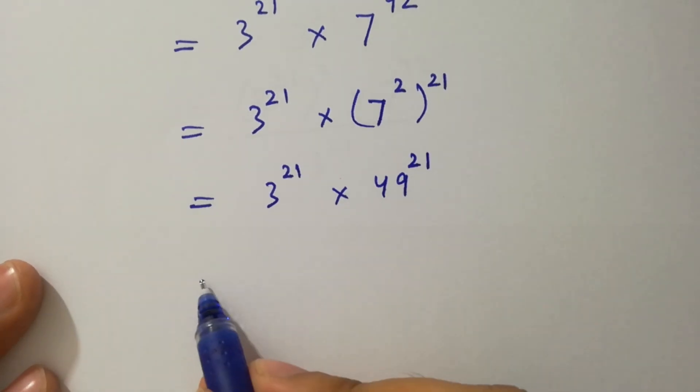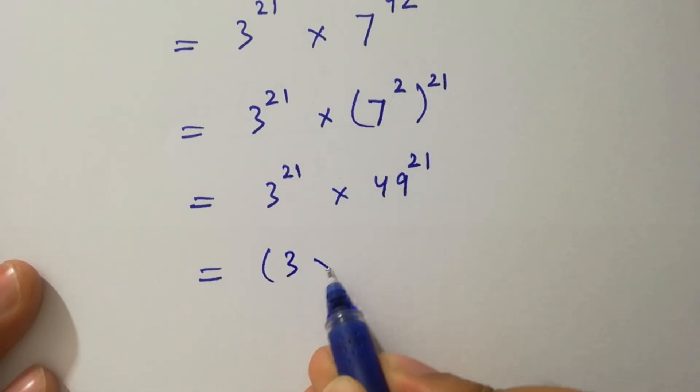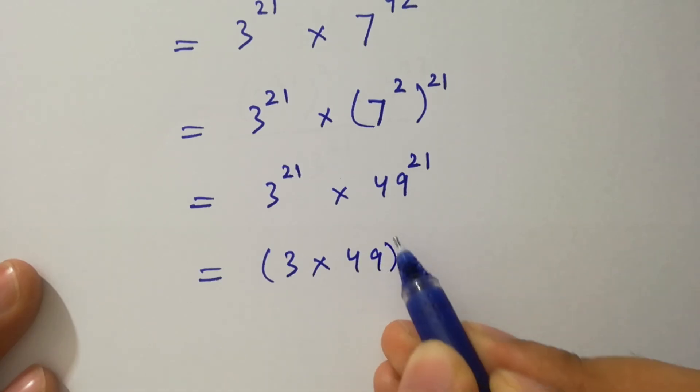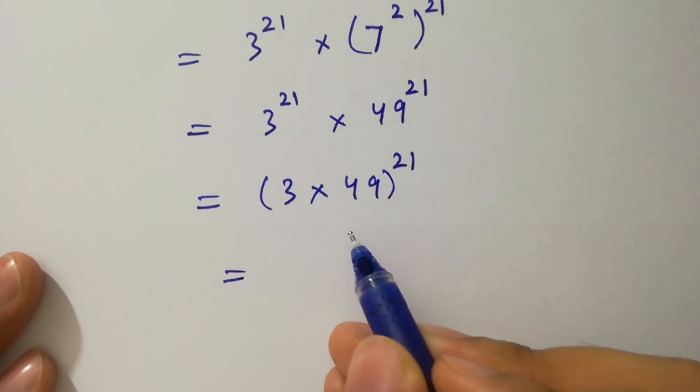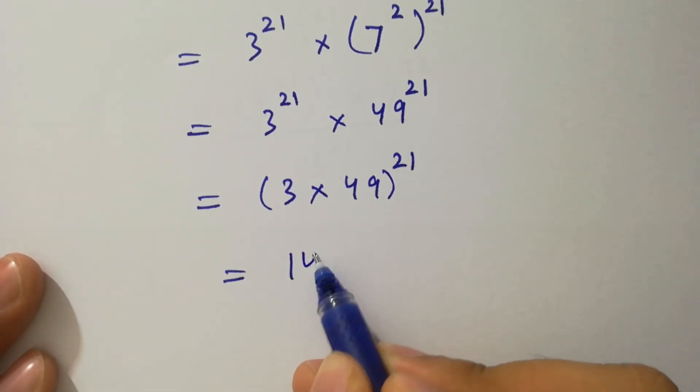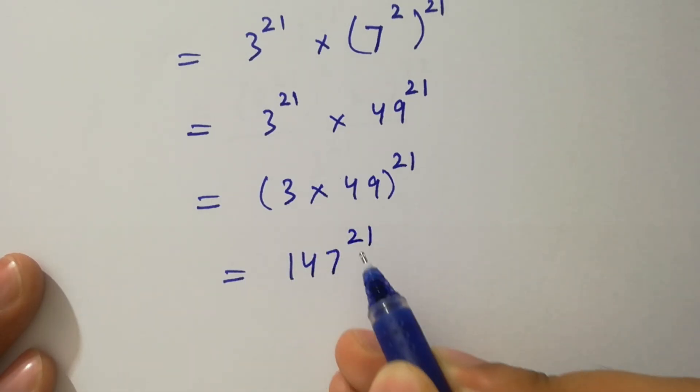Since powers are the same, it will be 3 times 49 to the power 21, where 3 times 49 is 147 to the power 21 as it is.